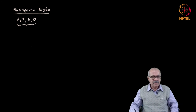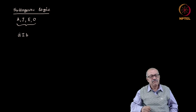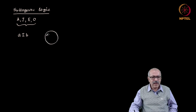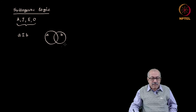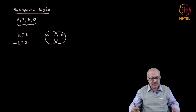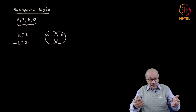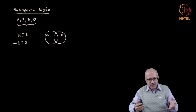For example, suppose you have a premise given as A-I-B, where I means 'some.' If I draw a Venn diagram it will be a blob of A and a blob of B with some overlap — some A are B. On that basis what can we conclude? We can conclude that some B are A. This is a valid inference.